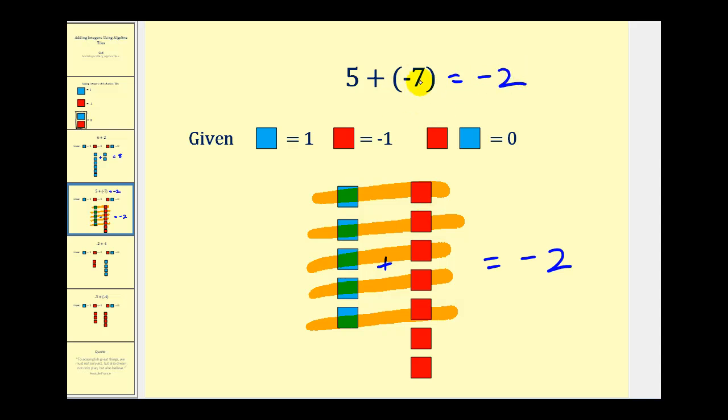Notice that since negative seven results in more red squares, the end result is negative.